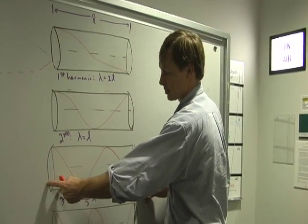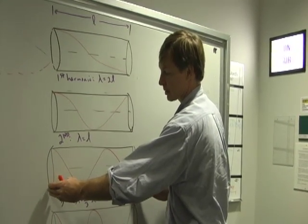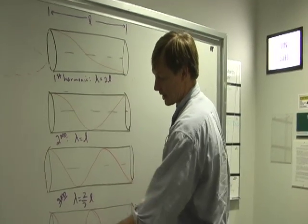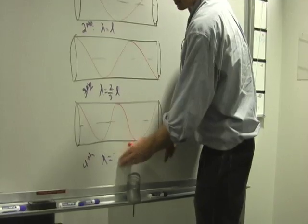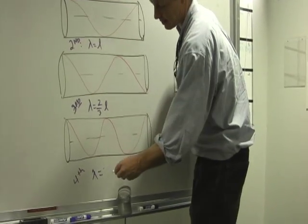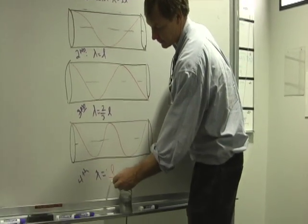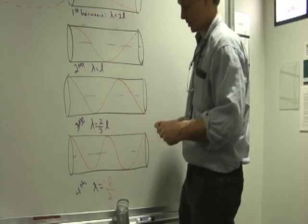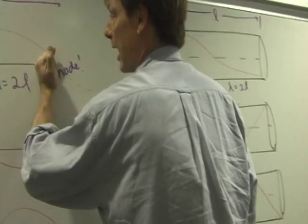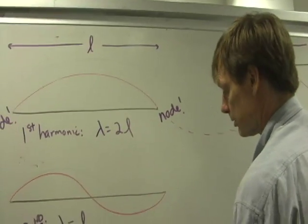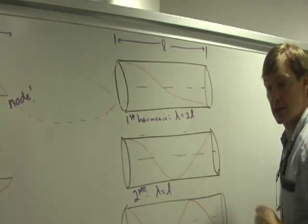Here again, I've got one and a half waves in here. So the wavelength is two thirds of the tube. And finally, I wind up with a wavelength that's half the length of the tube. So I fit two wavelengths in there. But all it is, is just finding out how I can get a node at the end, or how I can get an anti-node at the end.